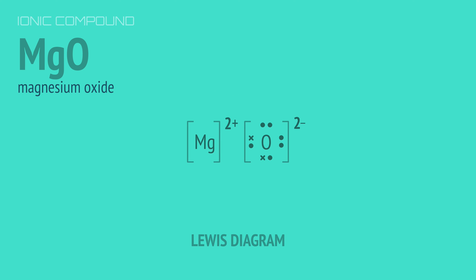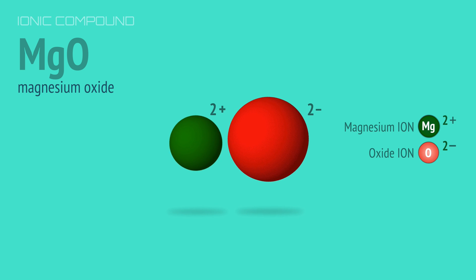And here's the Lewis dot diagram showing how the valence electrons are involved in the bonding. The ionic bond between these ions is extremely strong due to the larger charges on the cation and anion.